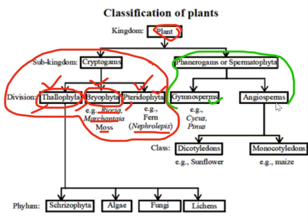Next we move to Angiosperm — all kinds of flowering plants under Phanerogames or Spermatophyta. The plants belonging to this group have a highly developed plant body which can be differentiated into root, stem, leaves, flowers, and fruits. And the seeds are enclosed in a fruit.